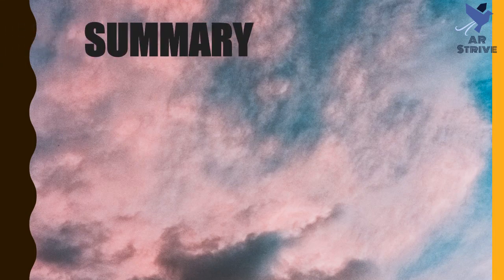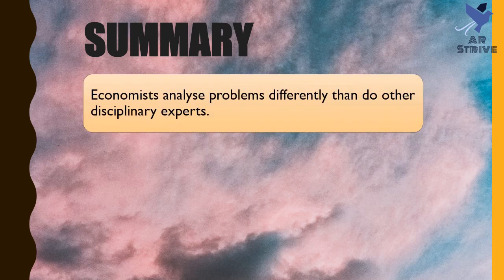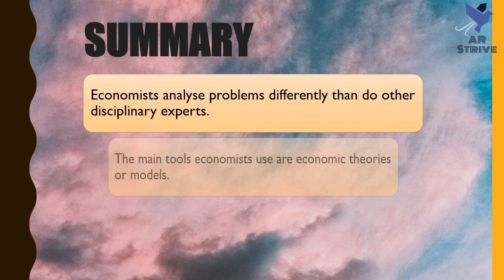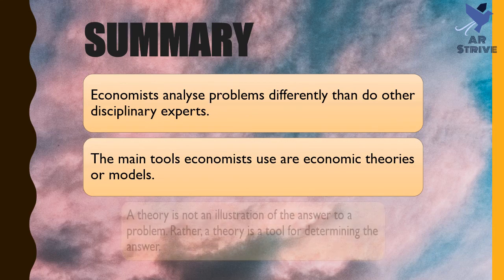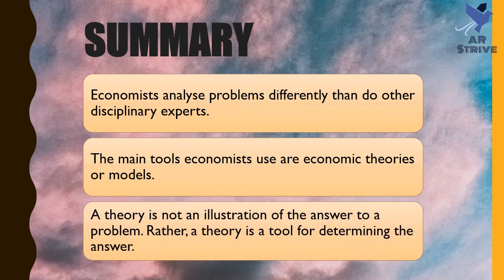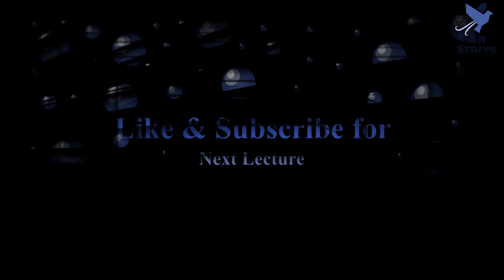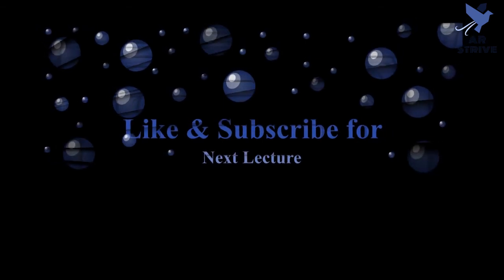Economists analyze problems differently than do other disciplinary experts. The main tools economists use are economic theories or models. A theory is not an illustration of the answer to a problem — rather, a theory is a tool for determining the answer.